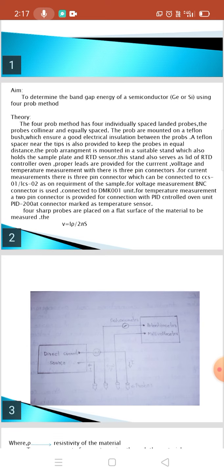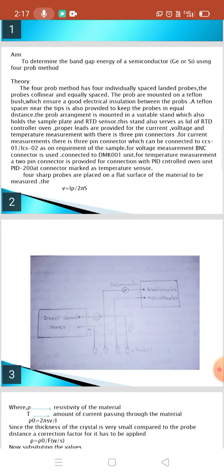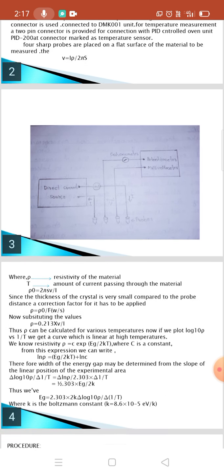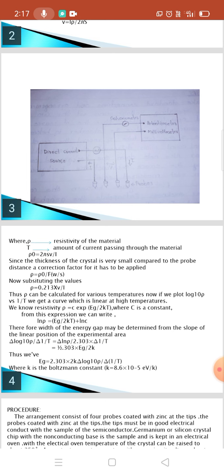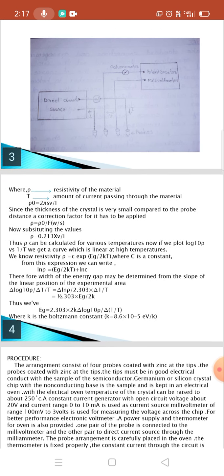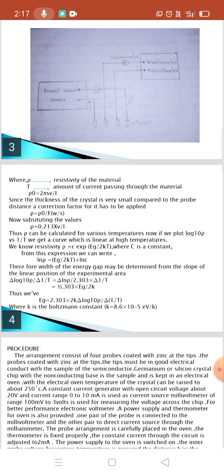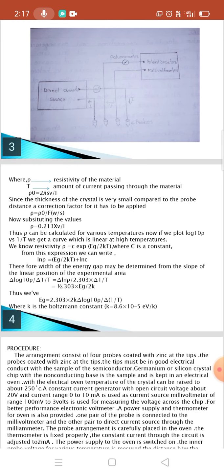The 4-probe is placed on a flat surface of the material to be measured. The voltage is equal to I into rho by 2πS, where rho is the resistivity of that material and I is the amount of current passing through the material. Rho zero is equal to 2πS V by I. Since the thickness of the crystal is very small compared to the probes distance, a correction factor for it has to be applied. Rho is equal to rho zero by f(W/X). Now substituting the values here, rho is equal to 0.213 into V by I.